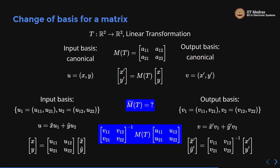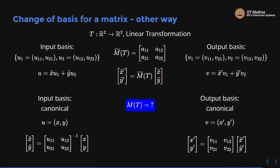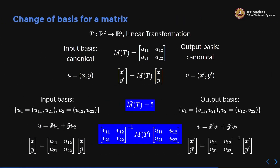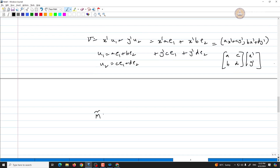To change from canonical to an arbitrary input and output basis: take the original m(t), multiply by a 2×2 matrix (U) on the right, and multiply by the inverse of a 2×2 matrix (V⁻¹) on the left. You may also ask the opposite: given m̃(t), how do I recover m(t)? That is very easy. We know m̃(t) = V⁻¹ · m(t) · U.